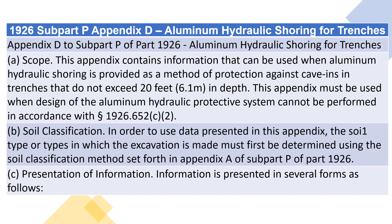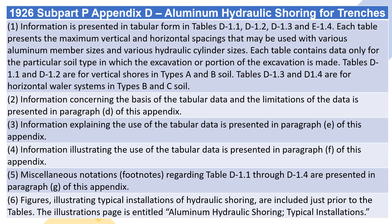C. Presentation of Information. Information is presented in several forms as follows. Information is presented in tabular form in tables D1.1, D1.2, D1.3, and D1.4. Each table presents the maximum vertical and horizontal spacings that may be used with various aluminum member sizes and various hydraulic cylinder sizes. Each table contains data only for the particular soil type in which the excavation or portion of the excavation is made. Tables D1.1 and D1.2 are for vertical shores in types A and B soil. Tables D1.3 and D1.4 are for horizontal whaler systems in types B and C soil.